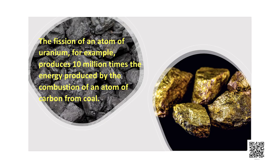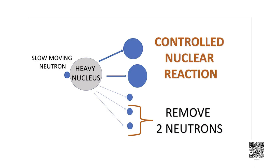The fission of an atom of uranium, for example, produces 10 million times the energy produced by the combustion of an atom of carbon from coal fuel. In a nuclear reactor designed for electric power generation, such nuclear fuel undergoes a controlled fission reaction that releases energy at a controlled rate.